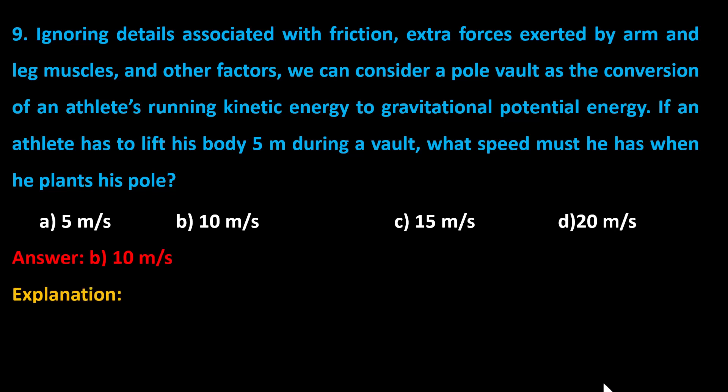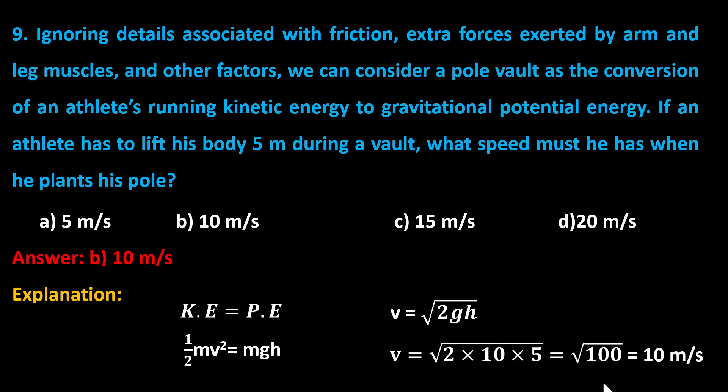Explanation: Here, the kinetic energy of the athlete becomes its potential energy. So, one half mv squared equals mgh, or v equals square root of 2gh. By putting the values, we get the answer 10 meters per second.